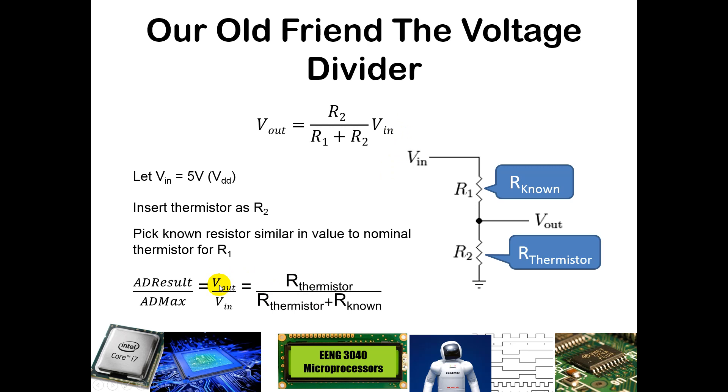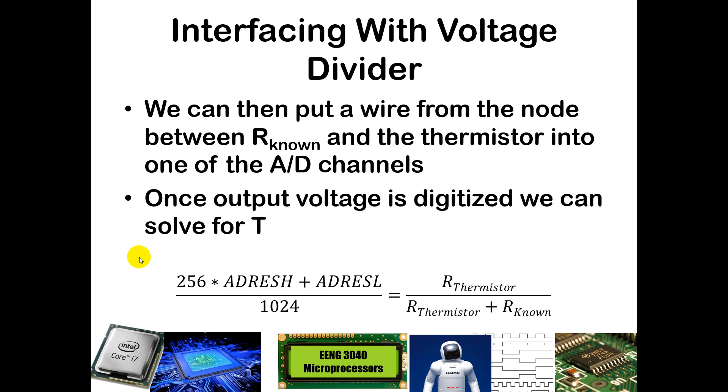We can then split this apart into a proportion and say, okay, Vout over VIN is going to equal the resistance of the thermistor divided by the resistance of the thermistor plus the resistance of the known resistor. This also relates back to our analog to digital conversion result. Our output voltage is going to be proportional to our input voltage the same way that our A to D result is going to be proportional to the maximum A to D result. We're going to use one more than the maximum, 2 to the N, where we have N bits. Our full analog to digital conversion result divided by 2 to the N is going to equal the resistance of the thermistor divided by the resistance of the thermistor plus the known resistance. You can back solve for this to isolate the resistance of the thermistor.